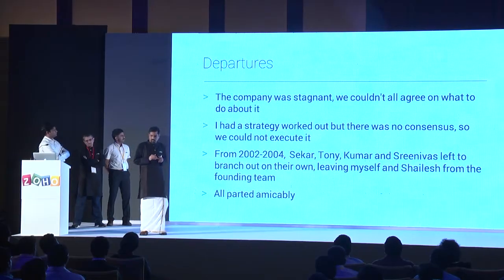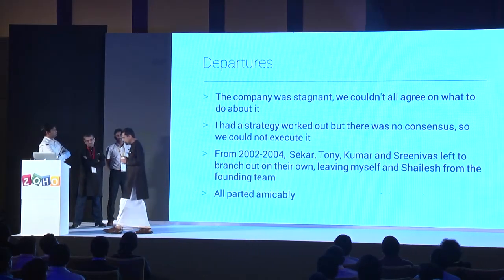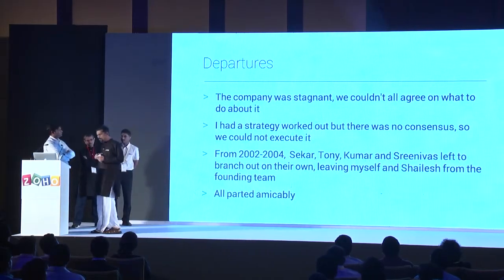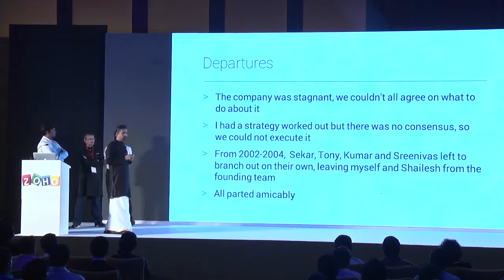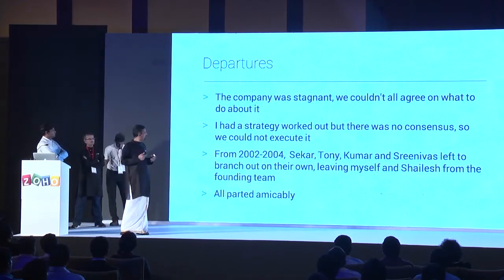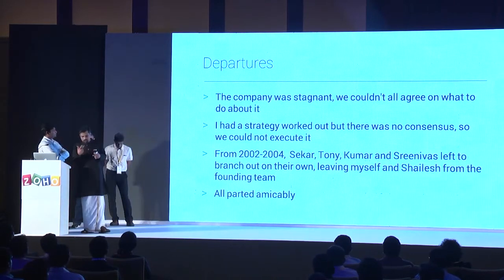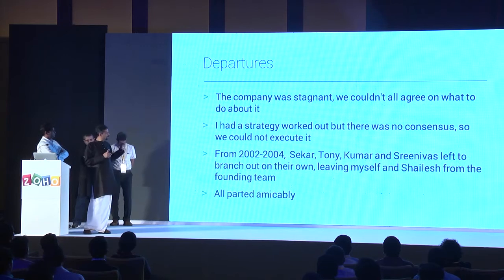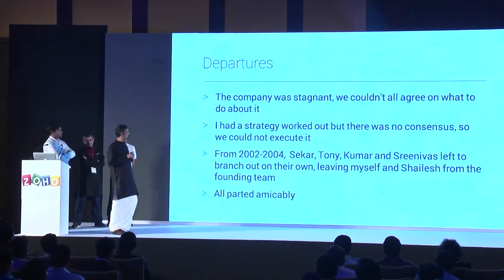Once the company was very stagnant, you had nowhere to go. You had lots of different ideas but people didn't agree with each other. That's what happened — it always happens. And then we had people branch out. Shekhar, Tony, Kumar, and Srinivas all branched out.